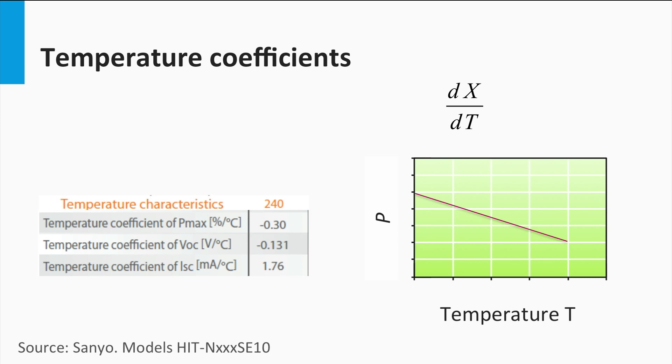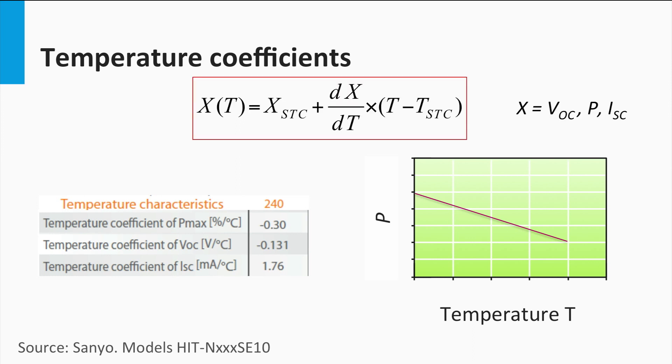Given these coefficients, how do we calculate the PV output with respect to the temperature change? We can use this simple equation. The term dx dt denotes the temperature coefficient of the particular parameter. The reference temperature taken for this calculation is the standard test condition temperature, which is 25 degrees Celsius.